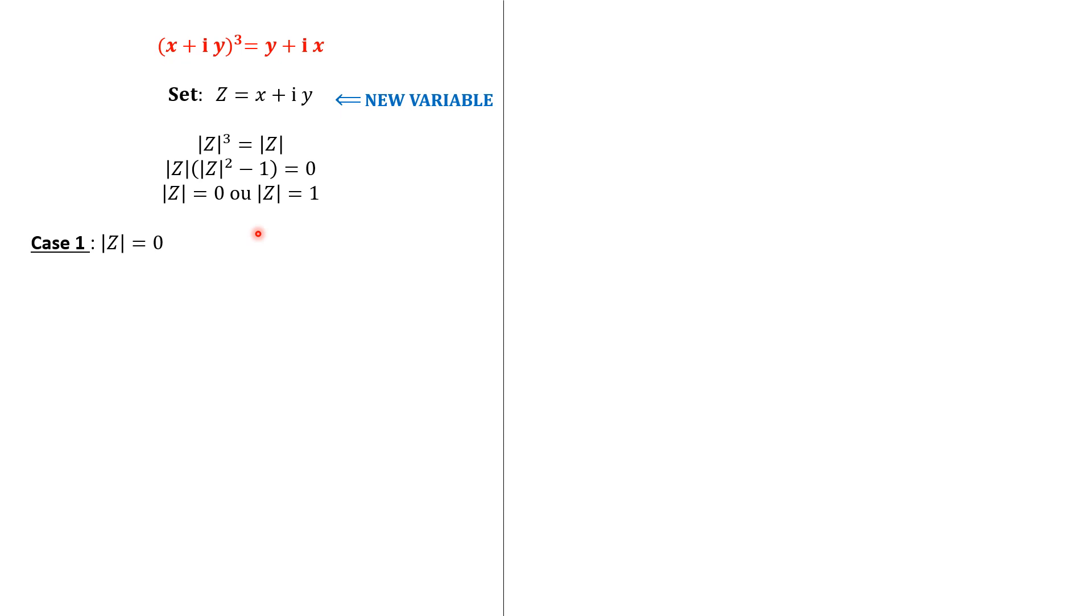Let's dive into the first case. |Z| equals 0 means that Z is 0, and therefore x equals y equals 0. And we have the first solution. Now we can turn our attention to the second case: |Z| equals 1.